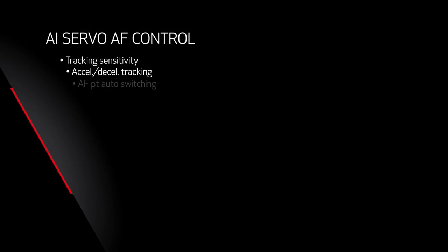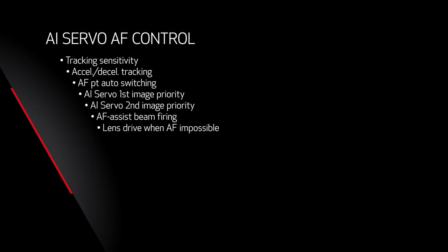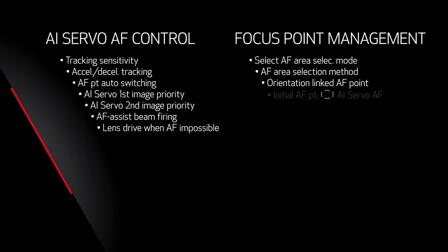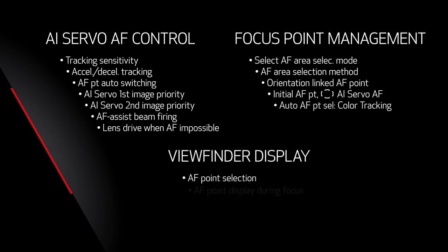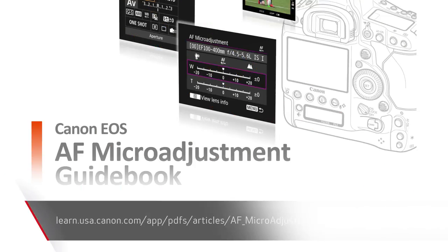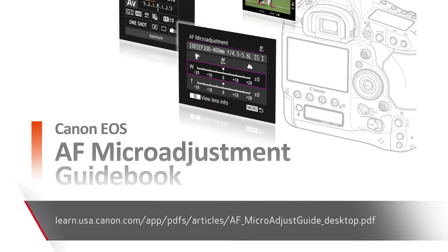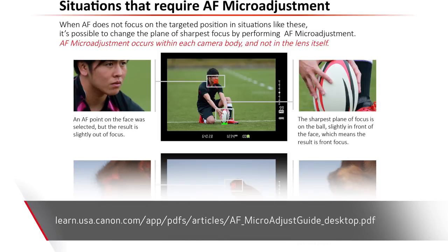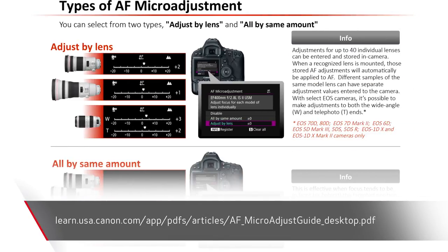There are three primary aspects of autofocus control in your custom functions menu, and we're going to have a separate video episode for each of these. They are AI servo AF control, focus point management, and the viewfinder display. Now, there's one custom function setting called AF micro-adjustment that we're not going to talk about here, because there's a very detailed, downloadable guidebook which you can get completely free of charge on Canon USA's Digital Learning Center website.